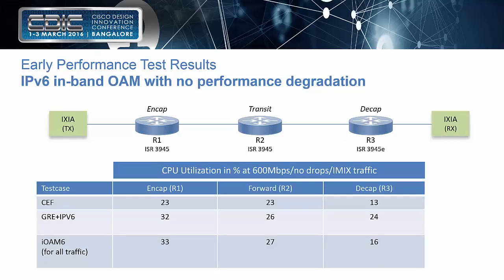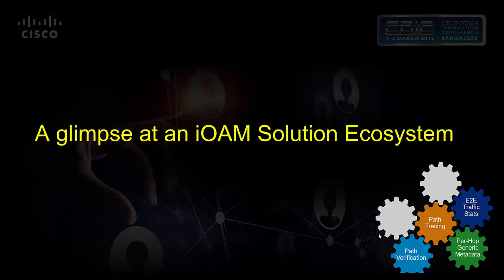A typical concern is performance. The answer is yes, it performs. We did a trial implementation on a plain-vanilla ISR G2 router and found that in-band OAM is no better or worse than any type of GRE or other tunnel encapsulation. There is an effort to put the header on and remove it, but apart from that there's hardly any overhead — our implementation was actually even slightly better than GRE encapsulation, which just means GRE encapsulation has some overhead we can avoid.